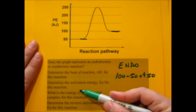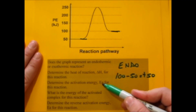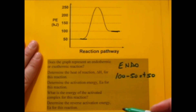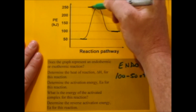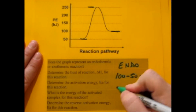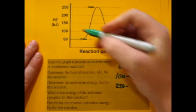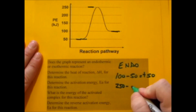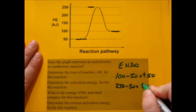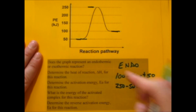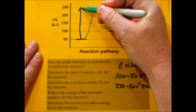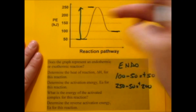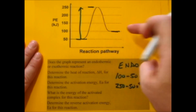Determine the activation energy for the reaction. Activation energy is abbreviated Ea. Here's your activated complex up here at 250, and the energy that we start at as a reactant is 50. So the difference is 200. You have to put 200 kilojoules of energy in to go from your reactants all the way up to the top of the hill to progress to the products.